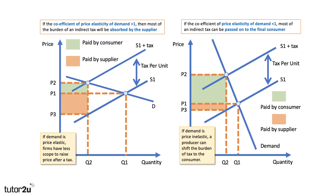On the left-hand diagram the green area is less than the orange area, whereas on the right-hand diagram the green area is bigger than the orange area — so the burden shifts as the elasticity of demand changes. These are really clean diagrams to use in any assignment; you'll get good marks because everything is fully labelled, shaded, and shown very clearly.